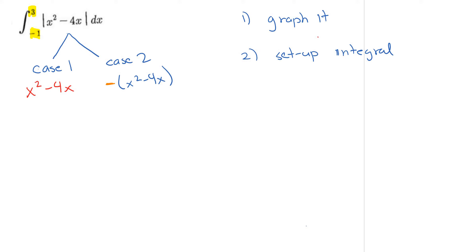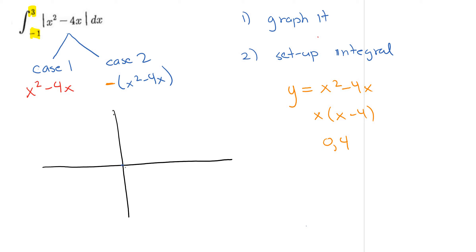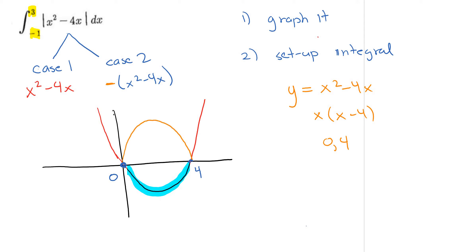Let's graph the absolute value function. Always graph the inside function first: y = x squared minus 4x. You can factor out x to get x(x − 4), meaning zeros at 0 and 4. Label those x-intercepts at 0 and 4, then draw your parabola. For the absolute value, the part underneath the x-axis gets reflected across it. Erase the original below-axis portion, and there's your absolute value function.